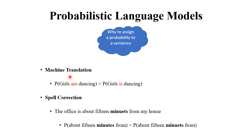Machine translation is a task to automatically convert a source language sentence to a target language sentence. While translating, we need to find the most probable target language sentence as the output. For example, we may get two candidate sentences: 'Girls are dancing' and 'Girl is dancing.' We find the probability of each. Since 'Girls are dancing' is more probable, we finalize it as the translation.